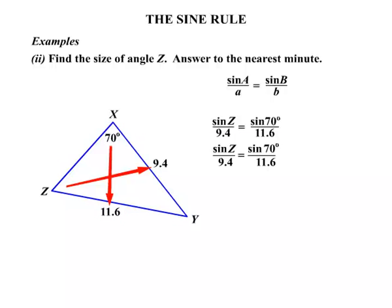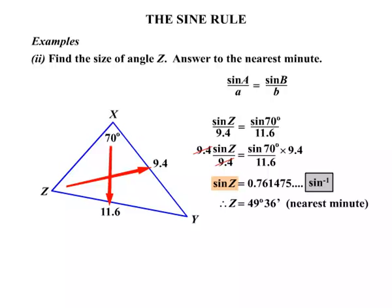Now let's rewrite that. Bit of cancelling down to be done. We want the sine Z by itself. So let's get rid of that 9.4. At the moment it's dividing. So let's multiply both sides by 9.4. On the left hand side they'll cancel. So we get the sine Z equals. And again using the calculator 0.761475. Now we need to find Z. At the moment we've taken the sine of it, the opposite. We need to take the inverse sine. On the calculator often shift sine. When we do that we get Z equals 49 degrees and 36 minutes rounded to the nearest minute.